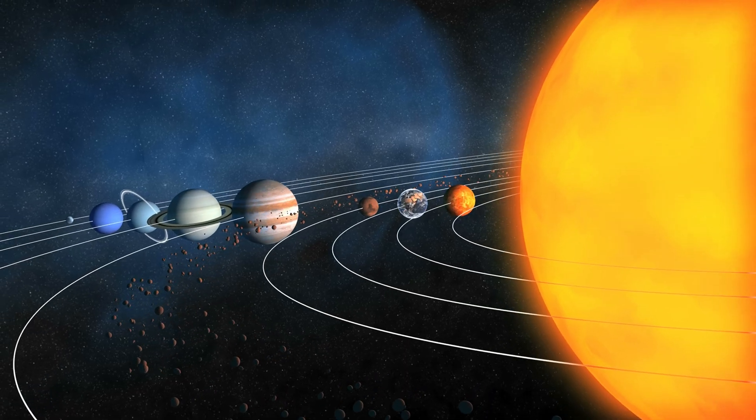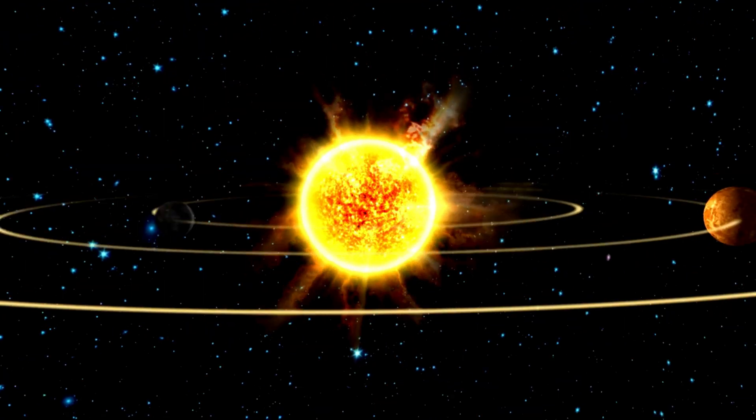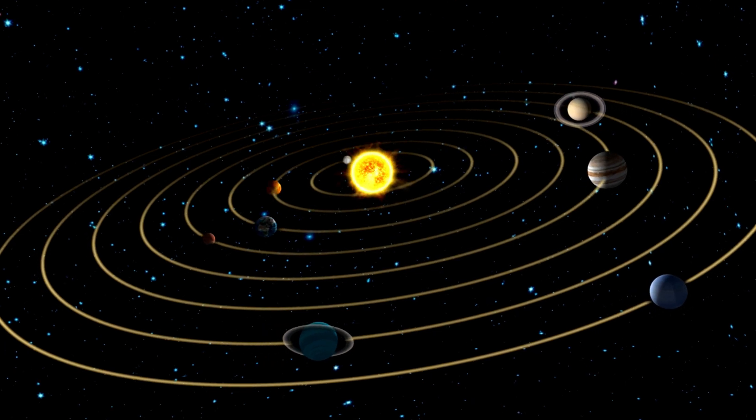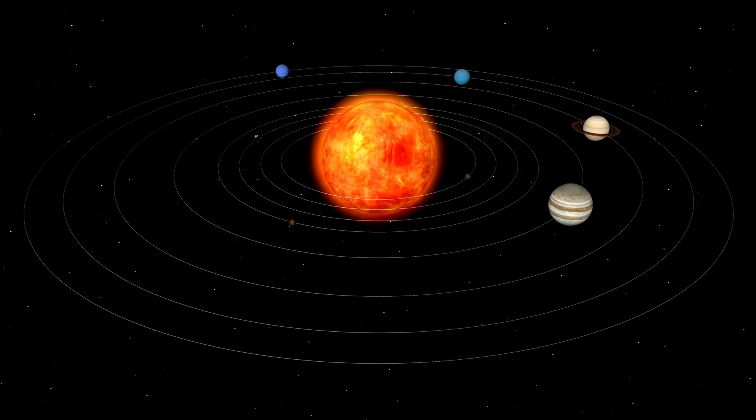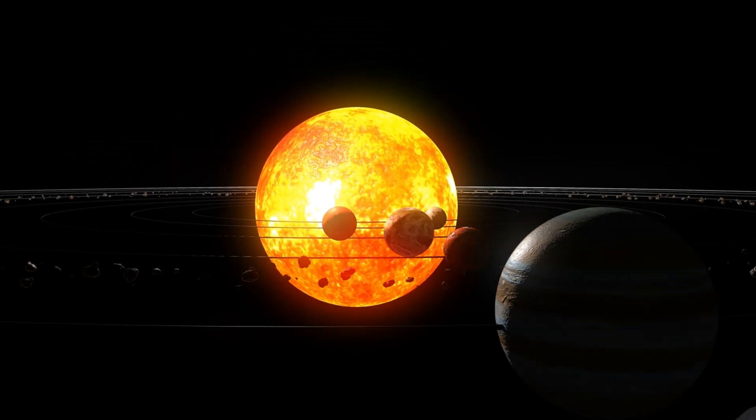In our solar system, the planets are kept in their orbits by a balance between the sun's gravity pulling them inward and their speed trying to move them outward. The farther a planet is from the sun, the slower it moves in its orbit, which keeps everything in balance.